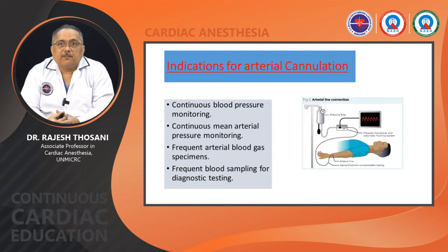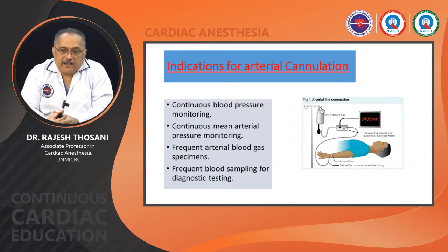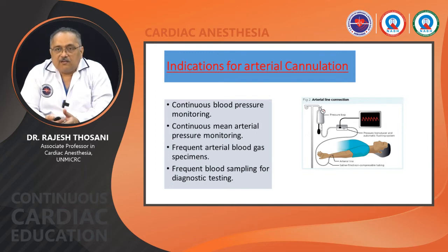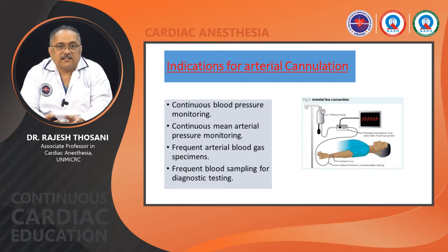Indications for arterial cannulation include the need for continuous blood pressure monitoring, continuous mean arterial pressure monitoring, frequent arterial blood gas sampling, and frequent blood sampling during certain therapeutic procedures. Radial, ulnar, or femoral lines can be used depending on availability. Let us now see the video demonstrating intra-arterial cannulation.